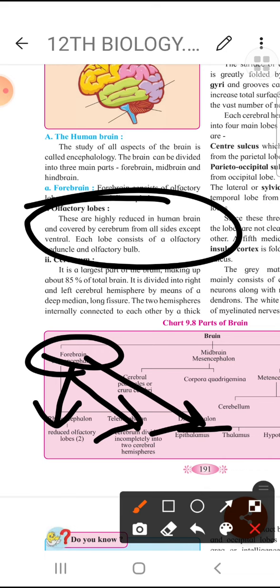These are highly reduced. Textbook should be open with you. Olfactory lobes - highly reduced in human brain. Reduced means its structure is not properly developed and it is covered by cerebrum from all the sites.